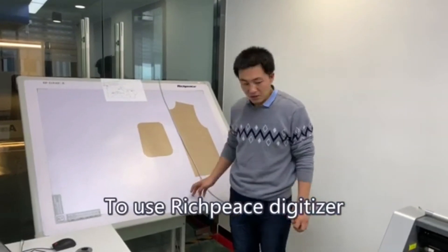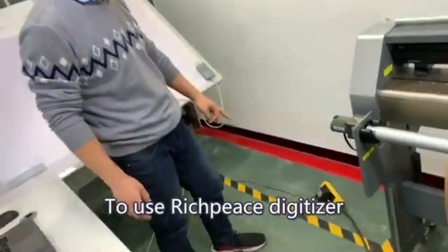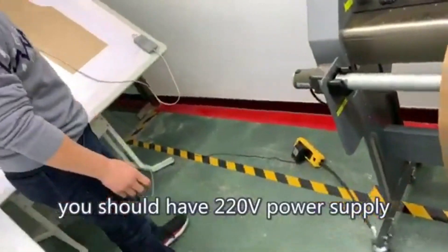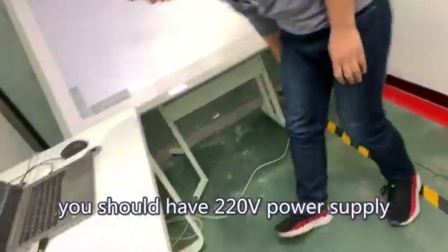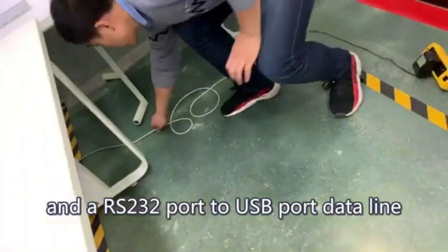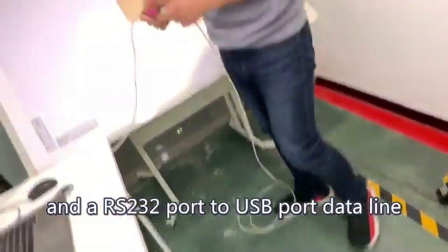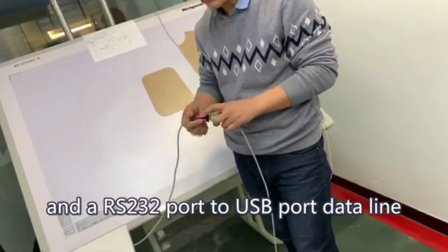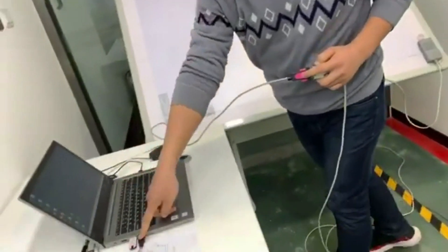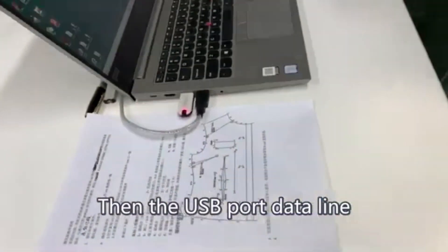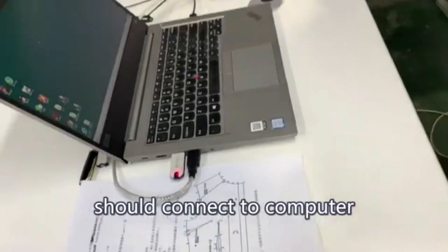To use Rich-piece digitalizer, you should have a 220-voltage power supply and a RS-232 port to USB port data line. Then the USB port data line should connect to computer.